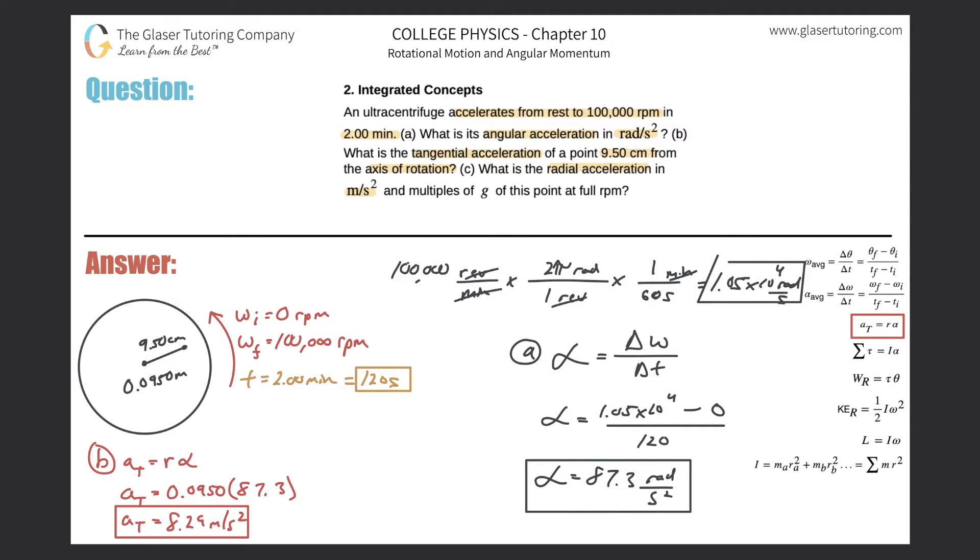So I'll write it up here. Radial acceleration: basically, whenever you hear radial, you can substitute that in for centripetal. So just reframe the question. It's basically asking you, what is the centripetal acceleration in meters per second squared?